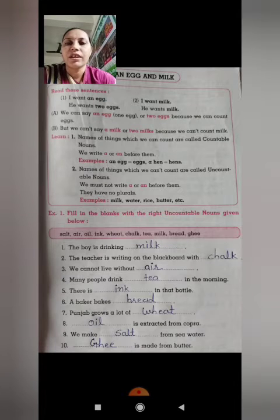Read these sentences. Number 1: I want an egg. He wants two eggs. Usko egg chahiye. Second is he wants two eggs. Usko do eggs chahiye. Number 2: I want milk. He wants milk.